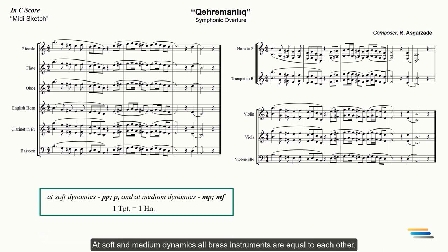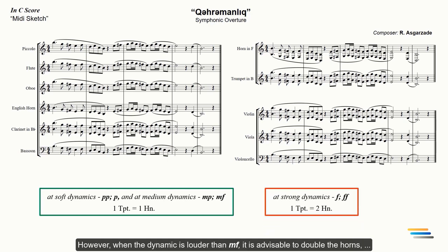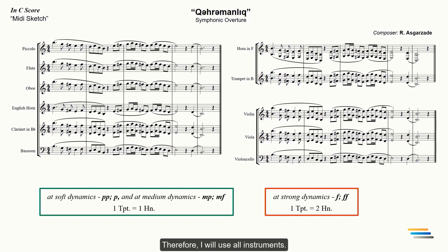At soft and medium dynamics, all brass instruments are equal to each other. This means that each brass instrument can be assigned a separate pitch depending on the register placement. For example, if the dynamic is mezzo piano, one trumpet is equal to one horn. However, when the dynamic is louder than mezzo forte, it is advisable to double the horns, which, when played in unison, will roughly equal the sound of other brass instruments. This is due to the weakness of the horn. For example, if one trumpet is at forte, two horns should be used to maintain the balance. I'm going to make a strong and thick timbre within the brass section. Therefore, I will use all instruments.